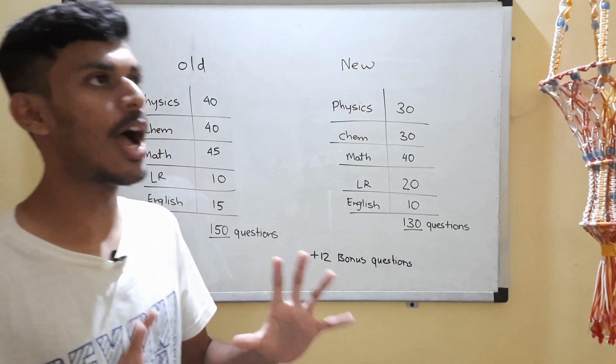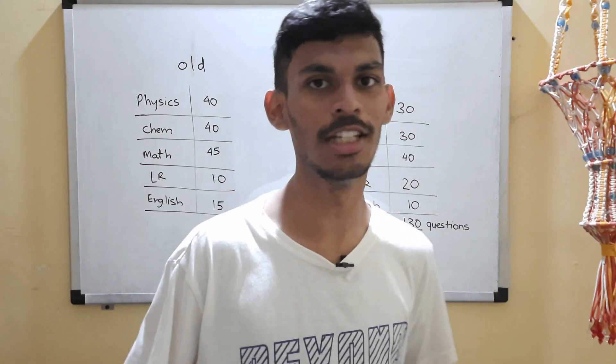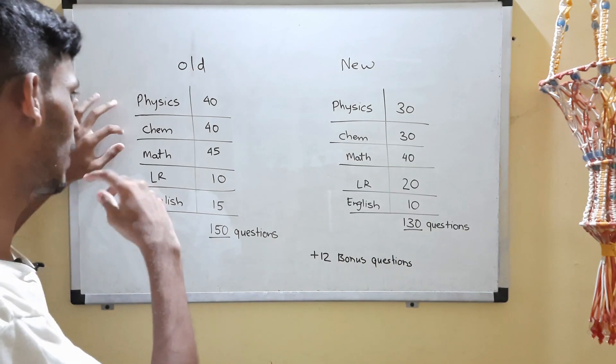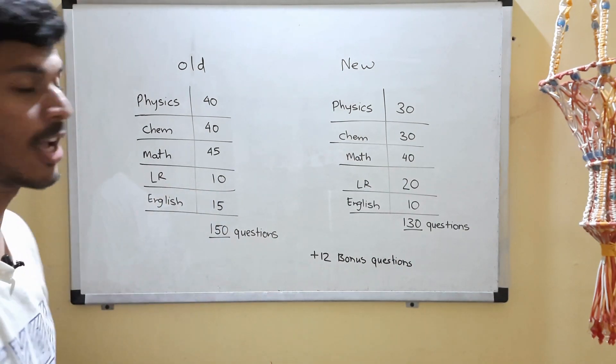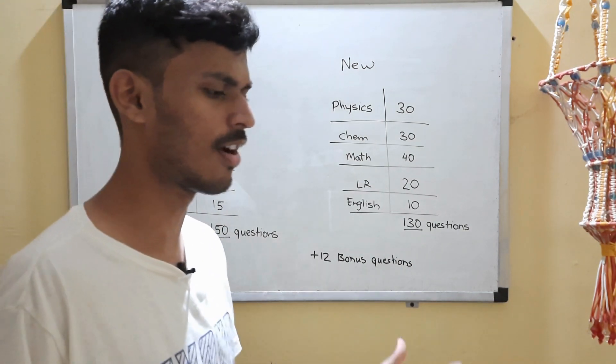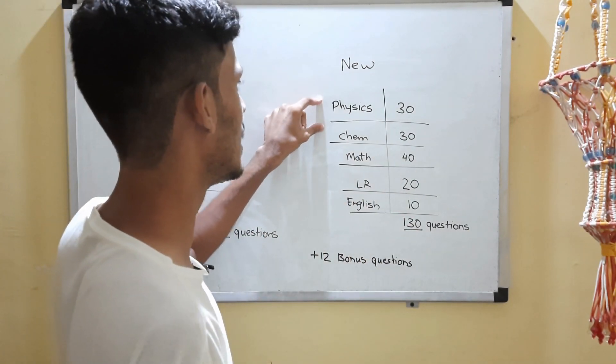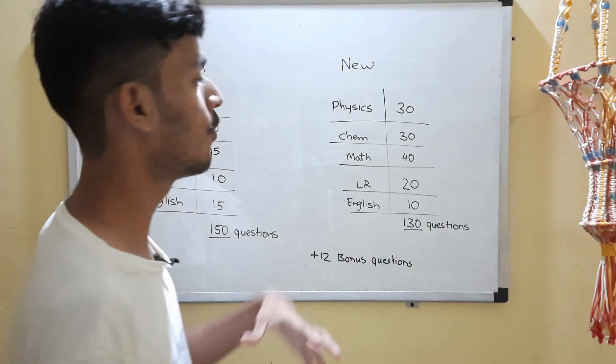But now I wish to highlight the dark side of this pattern. Earlier, if you see the old pattern, we had 40 questions in Physics and Chemistry each, and 45 questions in Maths—just 5 questions more. Coming to the new pattern, we see 30 questions each in Physics and Chemistry and 40 questions in Maths.